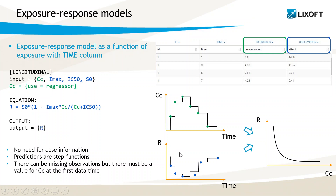Likewise, the prediction for the response is piecewise constant, since the effect model is direct with respect to the concentration, and the prediction changes at the time points where concentration values are provided. So some differences between the predictions and the observations in the individual fits will be due to the nature of the regression.